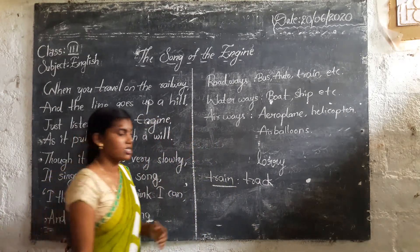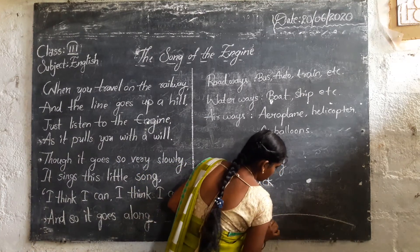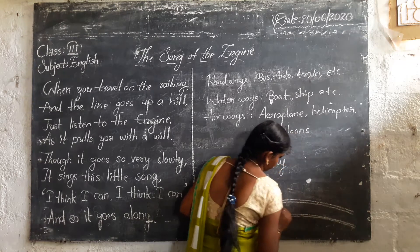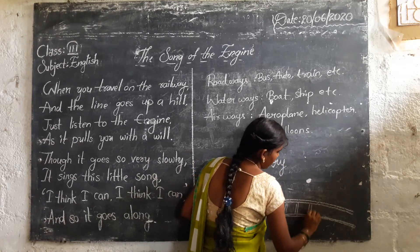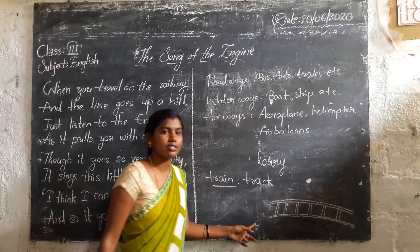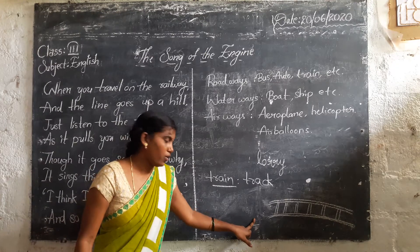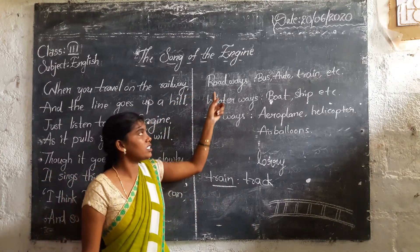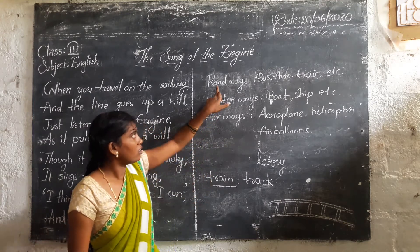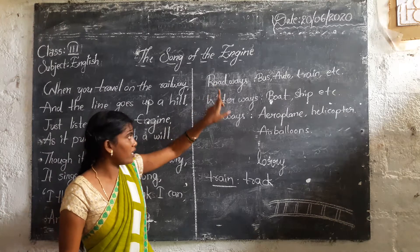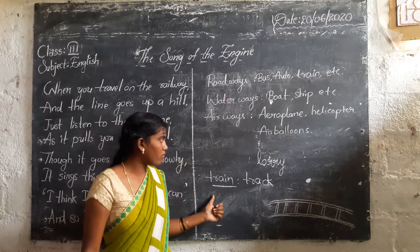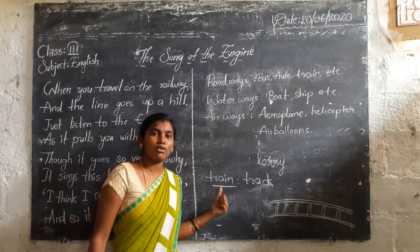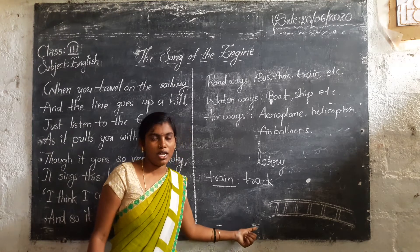Do you know a railway track? I am just drawing on the board — just look up. This is the track to run the train. So we discussed about vehicles and three kinds of transportation facilities: roadways, waterways, and railways. In roadways we have so many vehicles, and the train is not moving on the road — it has a particular path.